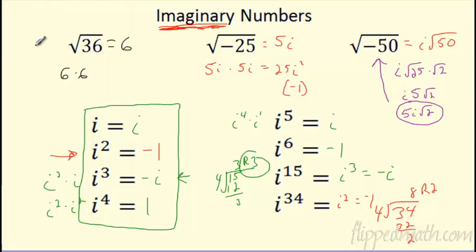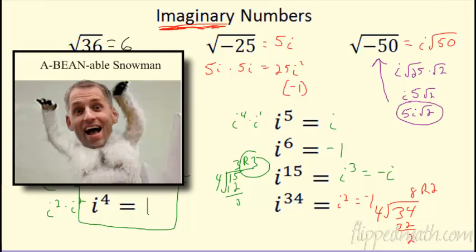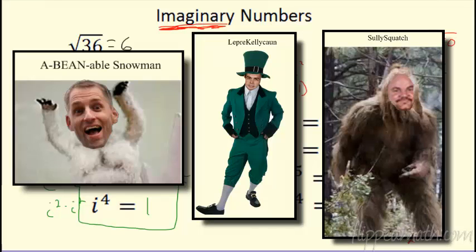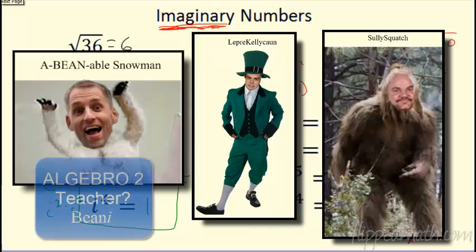When I think about imaginary numbers, I like to think about imaginary things. Here are my top 3 favorite imaginary things: number 1, the Abominable Snowman. What's my second favorite imaginary character? And what wraps it up — the third imaginary creature — it's Sully Squatch. Gotta be the Abominable Snowman — he's definitely the most imaginary. I haven't seen a video from Mr. Sullivan in Algebra 2. I'm starting to wonder if this guy exists — he may be a purely imaginary algebra teacher.